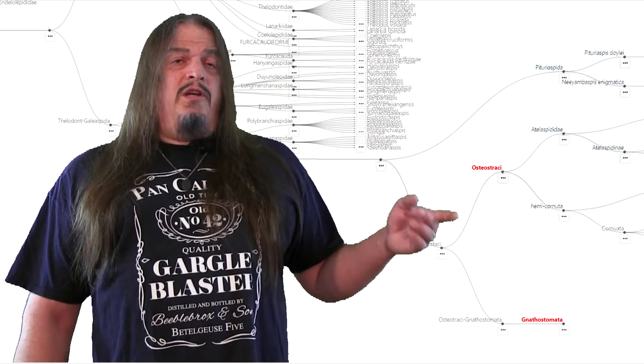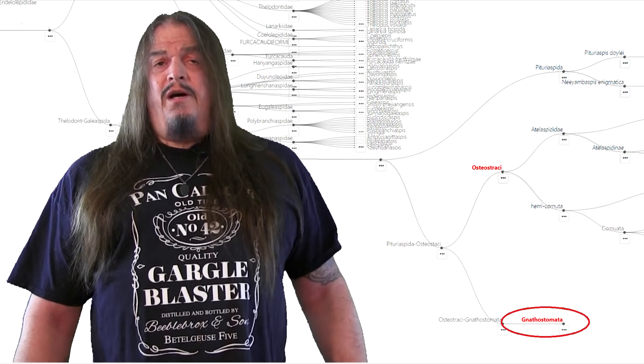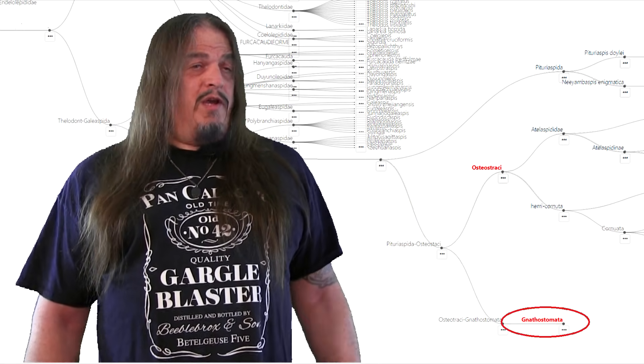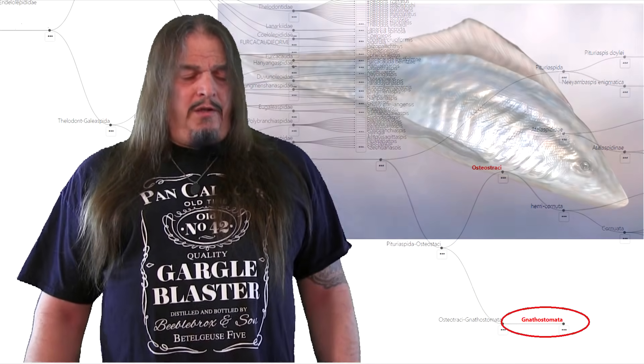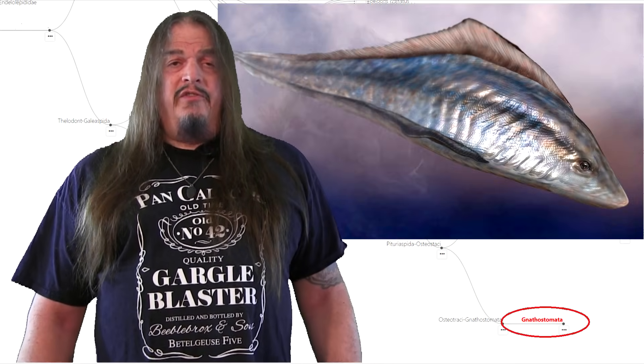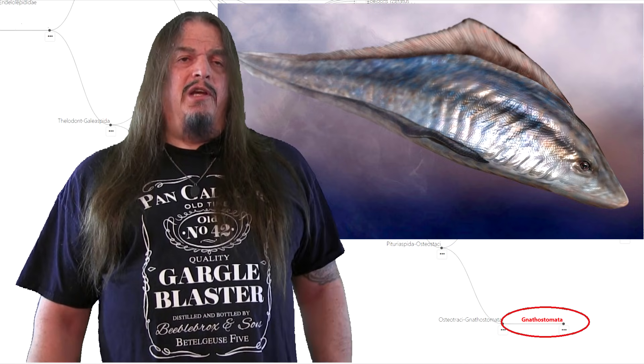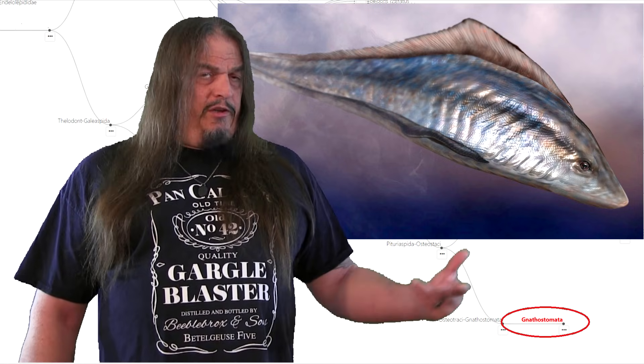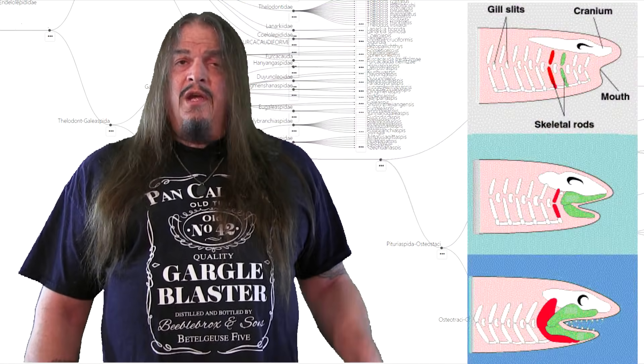But the subject of this video is this last group known as Gnathostomata, which means vertebrates with jaws. Now, how did that finally happen? Well, remember in the last episode when I said that even the Cambrian fish Metaspriggina already had gill bars, and that this would be significant later? As you can see, the development of the jaw is in concert with the post-vertebrate expansion of the skull.